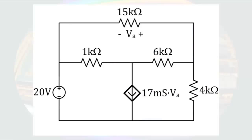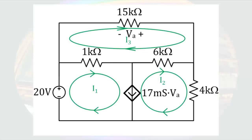We still have not covered all the difficulties we can encounter in mesh current analysis. Two pieces are missing: we have not done a dependent source, and we have not done a current source that touches more than one mesh current. So let's put both into one example. Here we have a circuit with a dependent current source that touches two loops. We can start the analysis with the same basic steps — first, I'll identify three mesh currents: I1, I2, and I3. Since we have a few mesh currents interacting, I'll also draw the direction of the current associated with each of the voltages.